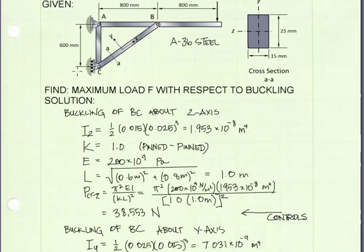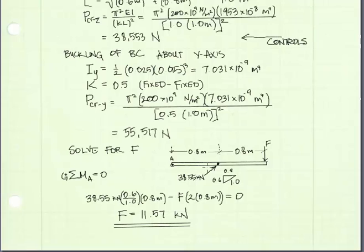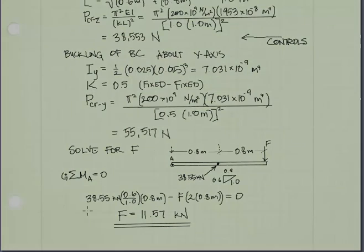Now we know what the load is that we can put on member BC. It's 38.6 kilonewtons. Now we need to relate the load in member BC to this force here at the end. The way we're going to do that is by summing the moments about point A and then calculating the force F. Drawing a free body diagram of the member with our load in member BC shown as 38.55 kilonewtons, we can sum the moments at A and solve for F, which is 11.57 kilonewtons, and we're done.